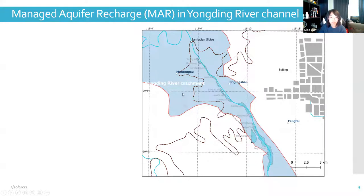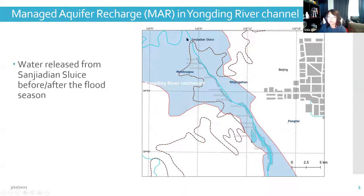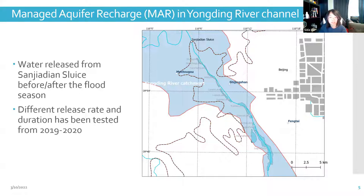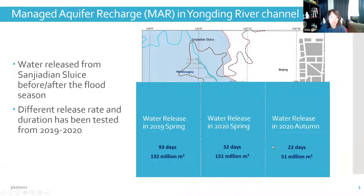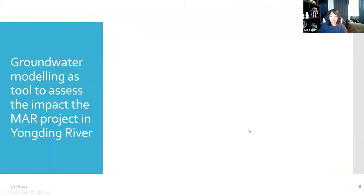During the release from the upstream sluice, the released water is recharged to the aquifer and the total infiltration area is around 10.4 square kilometers. Since 2019, water release from the sluice has been tested before and after the flood season with different release rates and durations. In 2019 spring, 132 million cubic meters were released over 93 days. In 2020 spring, 151 million cubic meters were released over 32 days, and another 15 million cubic meters were released over 22 days in autumn 2020. In order to assess the impact of this MAR project on the groundwater system, we used groundwater modeling for simulation.